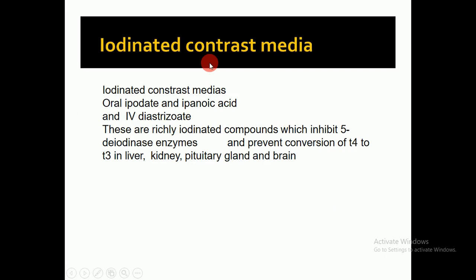Iodinated contrast media — oral ipodate and iopanoic acid, and IV diatrizoate — are richly iodinated compounds. They inhibit the 5'-deiodinase enzyme and prevent the conversion of tetraiodothyronine (T4) to triiodothyronine (T3) in the liver, which is the major organ responsible for this metabolism, as well as the kidneys, pituitary gland, and brain.